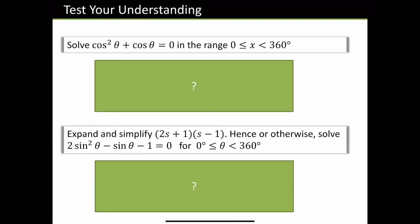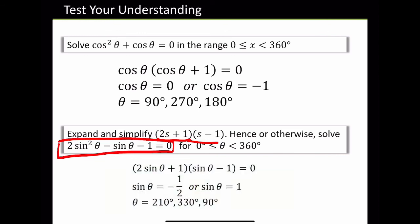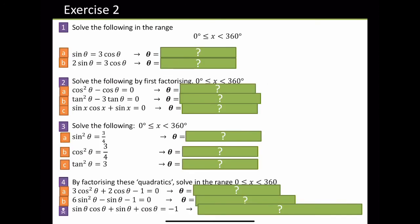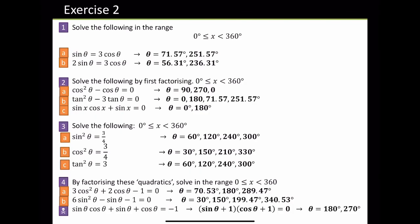Solve cos²θ plus cos θ equals 0 — same again, pause the video and try the questions. Next one: expand (2s + 1)(s − 1), hence otherwise solve this. The question has been set up so you understand you've got to factorise that. So this goes back into 2 sin θ plus 1 and sin θ take 1, and simply solving it. So you've got a few exercises to actually do — please make sure you do these and mark them. Go ahead. Thank you.